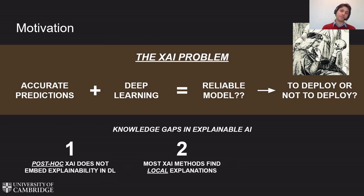Second, most explainable AI methods find local explanations, which means that explanations are often valid for one sample only. Class level explanations that are valid for a whole class of samples are extremely rare.